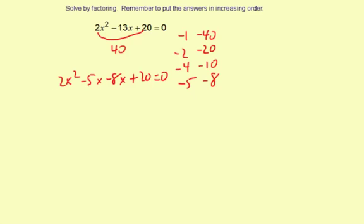Take out what's in common with the first two terms is simply an x. And x times what makes 2x squared? That's 2x. x times what makes negative 5x? That's negative 5.